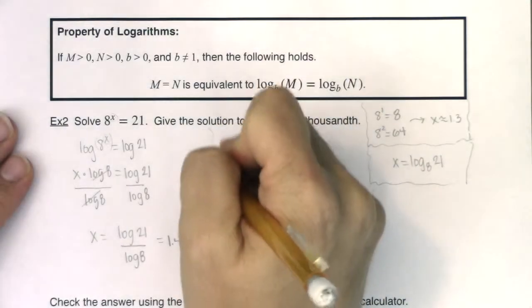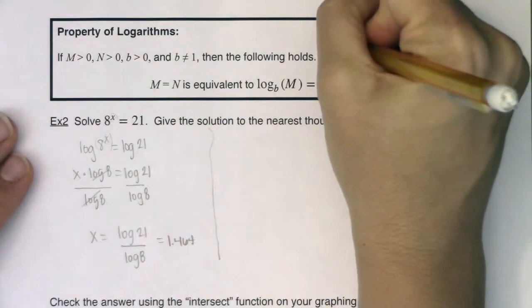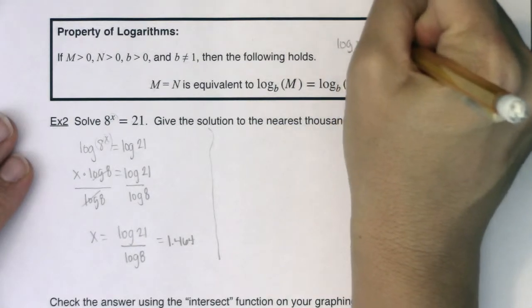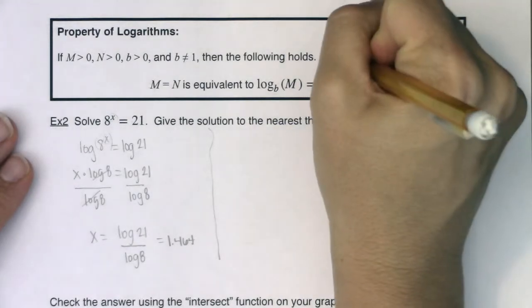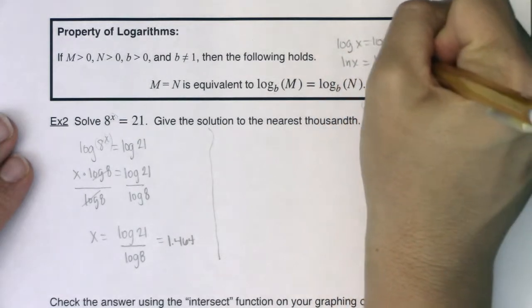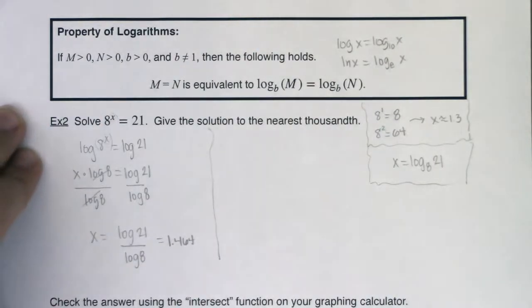So let's just make sure we're clear on this. If you see log of x, that's saying log base 10 of x. If you see natural log of x, that's log base e of x. And e was Euler's number. It was that number that was around 2.7128. So let's start this problem over. I'm actually going to rewrite it here. 8^x equaling 21.